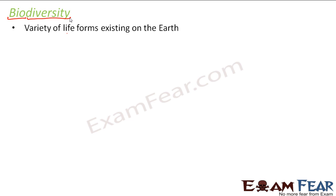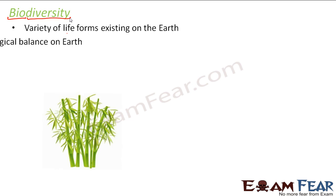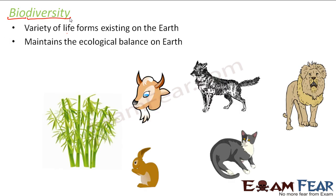Each of these life forms has a very important role to play. It is not that some organisms are important and some are not. Each and every living organism existing on the earth is very, very important and is playing a very crucial role. If one of them is not there, the entire balance of the earth might get disturbed. This is what we call the ecological balance — the balance maintained between the various life forms existing on earth.